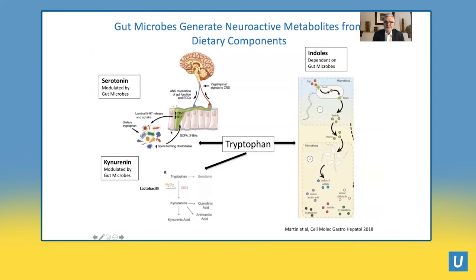This is just one of the tryptophan metabolites involving microbes. Another one is kynurenine — many of you have probably never heard of this. It's also a very important substance. Whereas serotonin is beneficial for many vital functions such as sleep, appetite, and overall wellbeing, kynurenine is a molecule that has been involved in neurodegeneration and neuroinflammation. The ratio of tryptophan transformed into either serotonin or kynurenine is also significantly influenced by certain microbes, such as the lactobacilli.